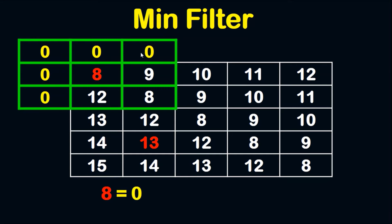As you can see, we have six pixels outside the input image. We are going to fill these pixels with zeros like this. Now the question is: what is the lowest value in this 3x3 mask? The answer is zero.